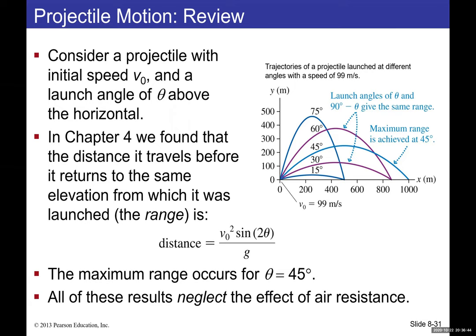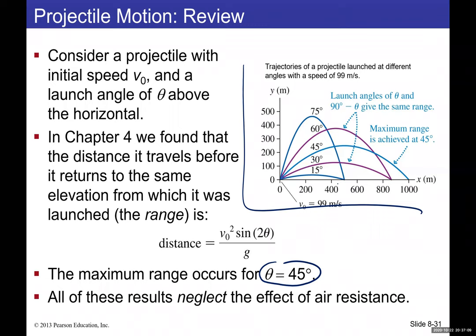If an object is launched at some angle, we can find the optimal launch angle. Ignoring air resistance, 45 degrees gives maximum range. Complementary angles like 15 and 75, or 30 and 60, give the same range, but 45 degrees gives the furthest range.